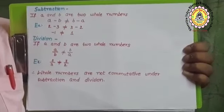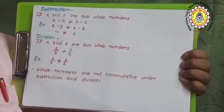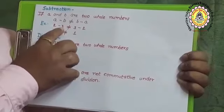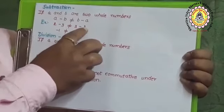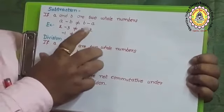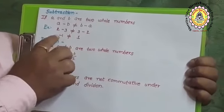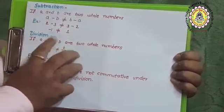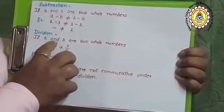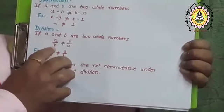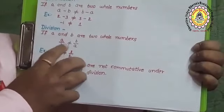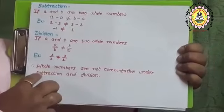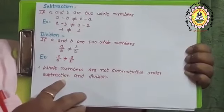For subtraction: if a and b are two whole numbers, a minus b is not equal to b minus a. For example, 2 minus 3 equals minus 1, while 3 minus 2 equals 1. Minus 1 is not equal to 1. So whole numbers are not commutative under subtraction. Similarly for division, a divided by b is not equal to b divided by a. For example, 2/3 is not equal to 3/2. Therefore whole numbers are not commutative under subtraction and division.